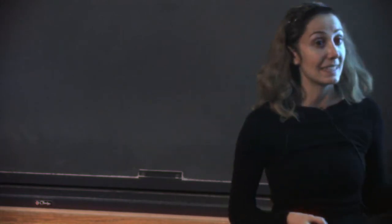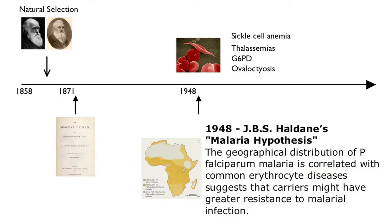In essence, Haldane observed that there are a lot of red blood cell disorders all around the world — thalassemia, sickle cell anemia, ovalocytosis — and they always seem to occur in tropical regions, particularly where malaria was endemic. Since malaria infects the red blood cells, his hypothesis was that somehow these conditions may have come to be because they protect from malaria. A few years later, AC Allison showed that the geographical distribution of sickle cell anemia very closely matches the distribution of malaria in Africa, and individuals who carry the sickle cell trait are protected from malaria.